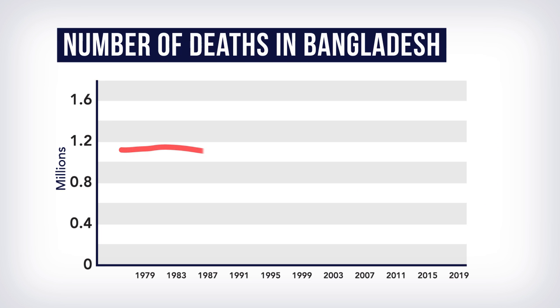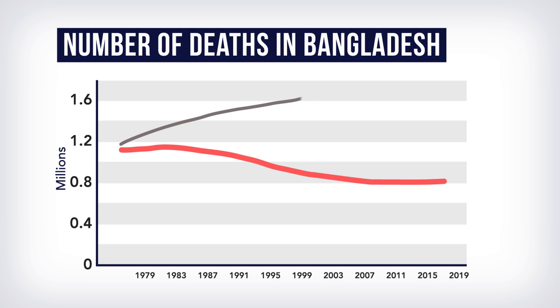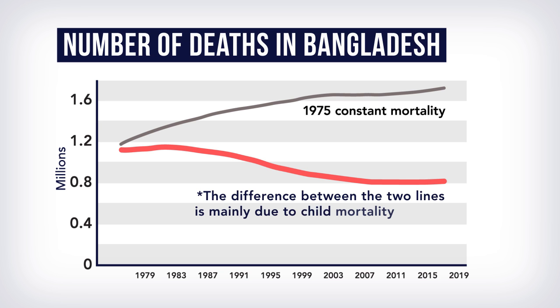During the same period, the annual number of deaths decreased from 1 million to about 800,000. If the mortality conditions in 1975 had remained the same, the number of deaths would have been about 1.7 million. The difference is caused by mortality decline, especially among children.